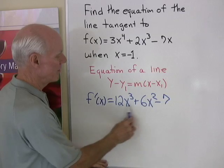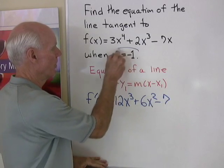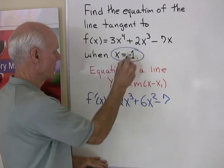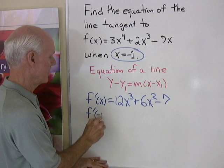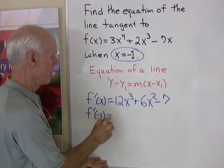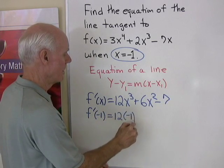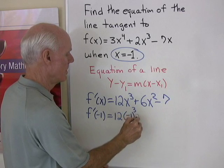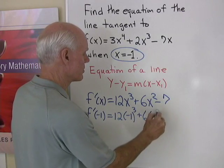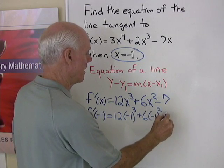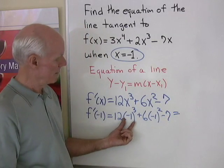Let's evaluate this derivative when x is equal to negative 1. So f prime of negative 1 is going to be 12 times negative 1 cubed plus 6 times negative 1 squared minus 7.